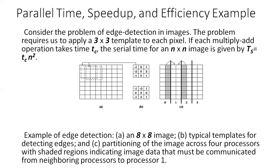Since we have 9 multiply-add operations for each pixel, if each multiply-add takes time tc, the entire operation takes time 9·tc·n² on a serial computer. A simple parallel algorithm for this problem partitions the image equally across the processing elements, and each processing element applies the template to its own sub-image. For applying the template to boundary pixels, the processing element must get the data assigned to the adjoined processing element.